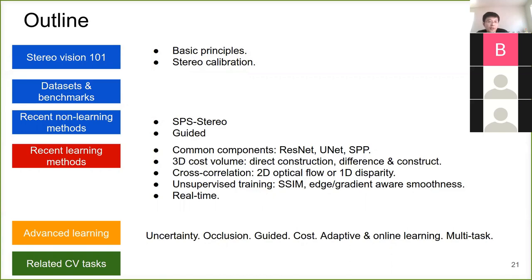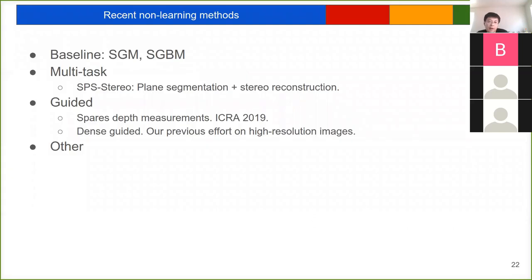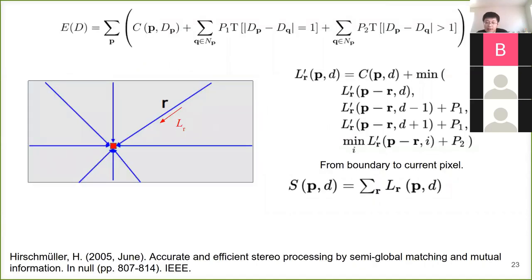Let's move to the recent non-learning methods. We'll focus on two: SPS stereo, which is a multi-task stereo method, and a sparse measurement guided method. Both are based on the SGM method, which we'll take as our baseline. SGM stands for Semi-Global Matching — most people know this method. For stereo reconstruction, SGM's most important two steps are matching cost computation and matching cost aggregation.